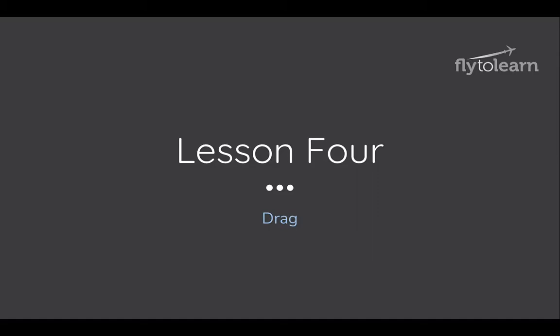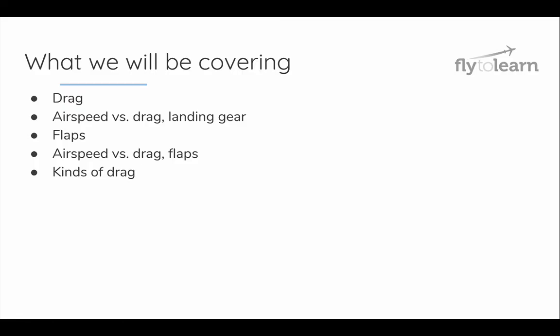Hi, and welcome to Lesson 4 of the Fly to Learn curriculum for X-Plane. Today we're going to be talking about drag. We're going to start off with an explanation of drag, and then we're going to talk about how drag affects airspeed. We're also going to be covering what the flaps on a plane are for, and how these flaps affect both airspeed and drag. Lastly, we'll be covering two major kinds of drag and differentiating between them, as well as talking about how engineers design planes to deal with both of these kinds of drag.